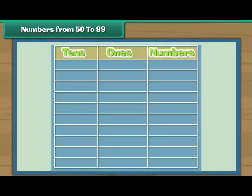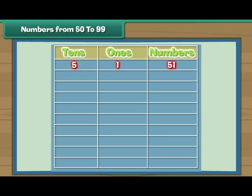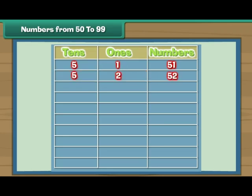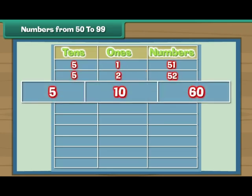Numbers from 50 to 99. Let us now complete one more table. Five tens and one give 51. Five tens and two give 52. Five tens and ten is 60.